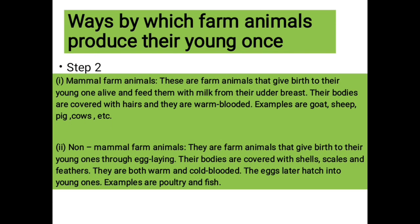At this point we're going to be discussing the ways farm animals produce their young ones. We have both mammals and also non-mammals. The mammals are farm animals that give birth to their young ones alive and feed them with milk from their breast. Their bodies are covered with hairs and they are warm-blooded animals. Examples are goats, sheep, pigs, and cows.